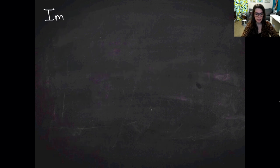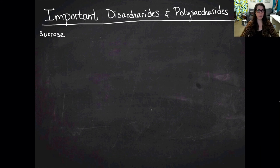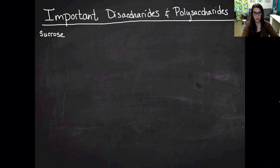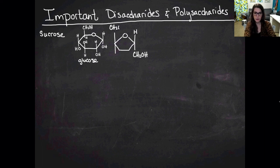We need to talk about some important disaccharides and polysaccharides. I'm going to start with disaccharides because they're simpler. The important disaccharide is sucrose, and sucrose is important because that is the sugar that you're most familiar with. Sucrose is table sugar - if you go into your pantry or you get a little packet of sugar when you get coffee, that is sucrose.